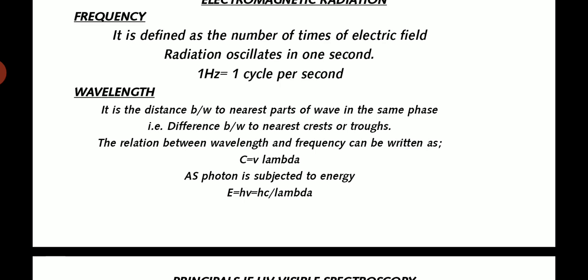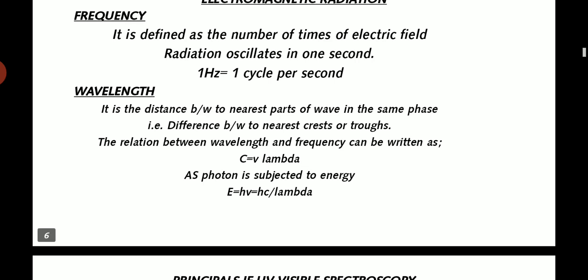Wavelength is the distance between two nearest parts of a wave in the same phase, for example, the distance between nearest crests or troughs. The relation between wavelength and frequency can be written as C equals V lambda. As photon is subject to energy, E equals HV equals HC over lambda.